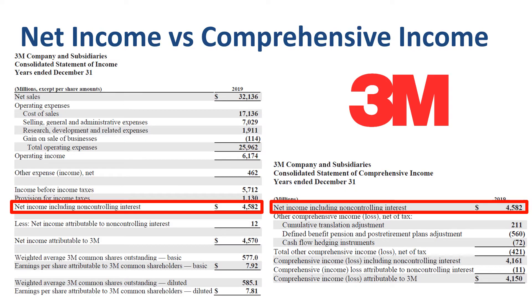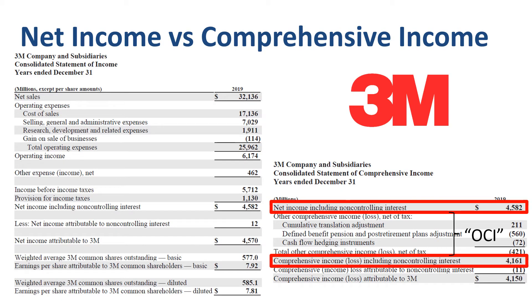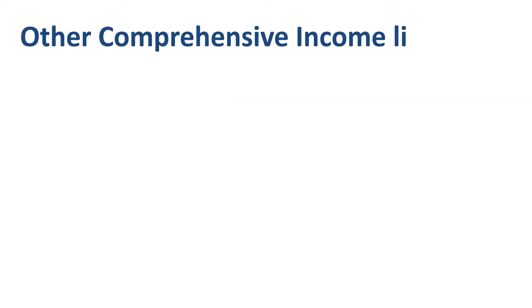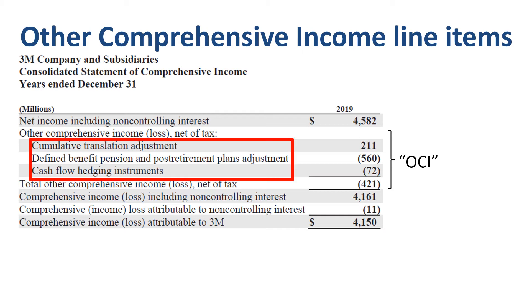Simply add or subtract the items of other comprehensive income to net income, and you get to comprehensive income. Let's zoom into other comprehensive income, or OCI. What are some of the line items that can be part of other comprehensive income? For 3M in 2019, three line items are listed: cumulative translation adjustment, defined benefit pension and post-retirement plans adjustment, and cash flow hedging instruments.